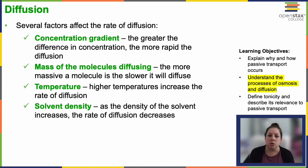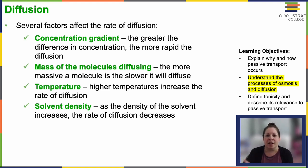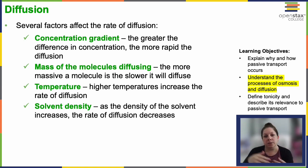Solvent density also affects diffusion. The solute was the molecule, and the solvent is what it's dissolved in — in this case, the cytosol or the extracellular fluids. The more dense the solvent is, the slower the rate of diffusion is going to be because the molecules can't move through it as easily. The extracellular matrix space is quite dense and viscous, so things can't pass through it as easily.